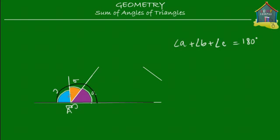So A plus B plus C is equal to 180 degrees. So there you go. That's all that there is about sum of angles of triangles.